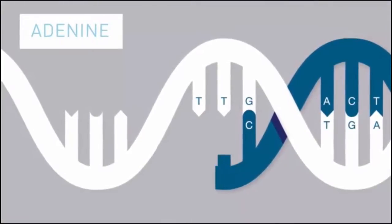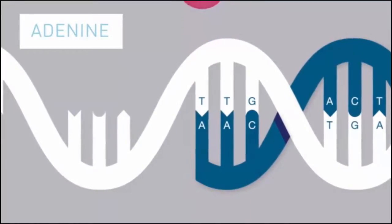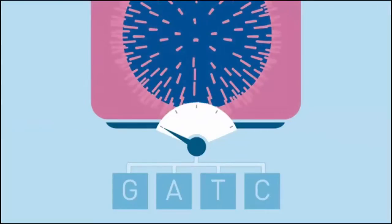If there are two identical bases next to each other, two nucleotides are incorporated, the voltage doubles, and the chip records two bases called. This process happens simultaneously in millions of wells.